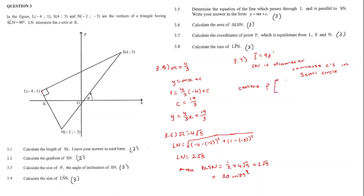We can use our midpoint theorem saying 4 plus negative 2 over 2 will be our x-coordinate between S and N. And our y-coordinate will be 5 plus negative 3 over 2. We will then get P to be equal to the coordinate 1, 1.